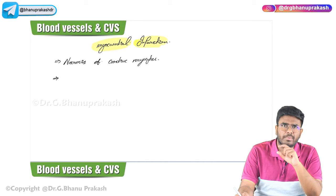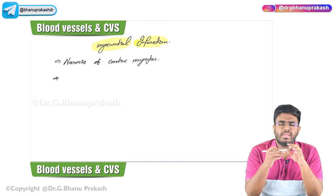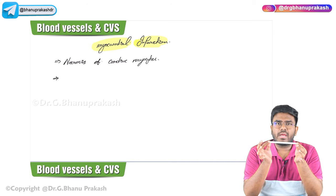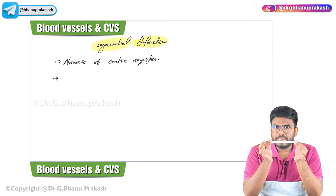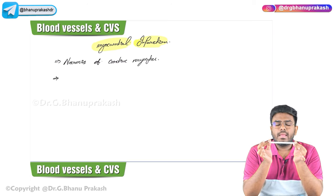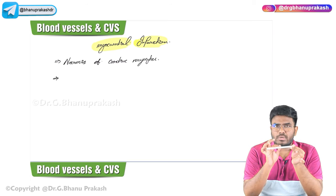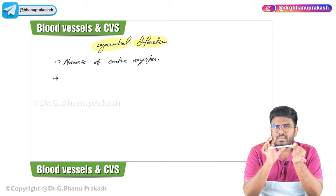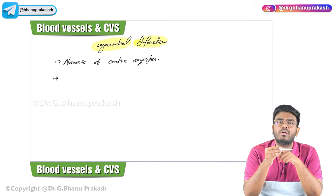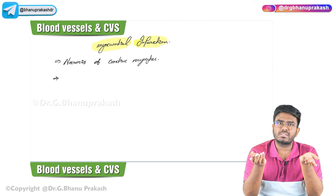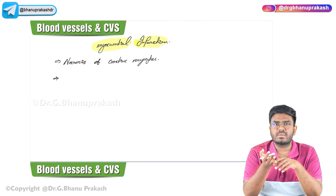Why is there no oxygen? Because of ischemia, that is reduced blood flow. Why is there reduced blood flow? The coronary arteries are having atherosclerosis. Imagine this is a coronary artery with an atherosclerotic plaque. This plaque undergoes rupture, and whenever rupture happens, thrombosis will occur. The thrombus will completely occlude the coronary artery. With complete occlusion, blood supply to the heart muscle is decreased - no oxygen supply - and the cardiac myocytes will undergo necrosis.